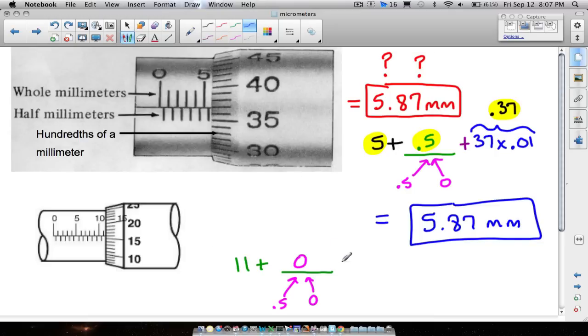And then last of all, we want to look back on the thimble and what numbers line it up. Here's 15, 16. So we got 16 and remember you can multiply that by a hundredth. So that's 0.01. Or you can just go ahead and say 16 with a decimal in front of it. That represents 16 hundredths of a millimeter. So if you add all this stuff together, what you actually end up with is 11 plus zero is still 11. So 11 plus 0.16 is 11.16 millimeters.